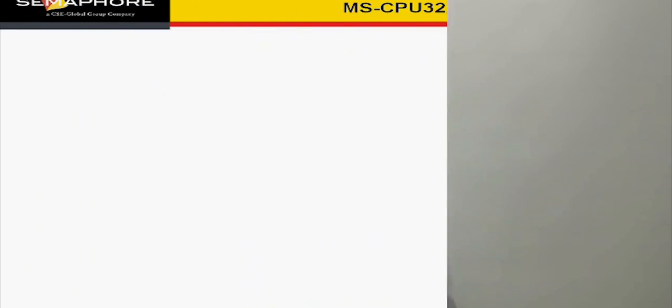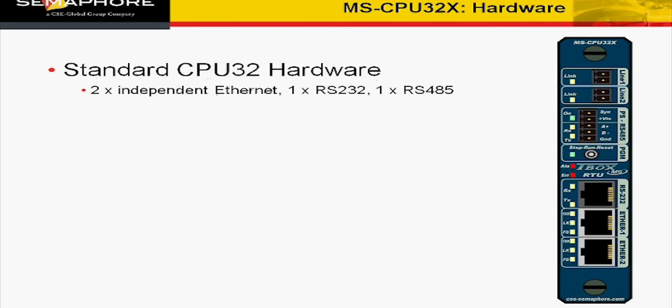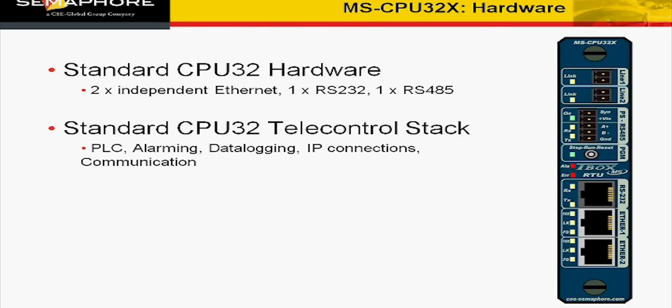As an example, let's take a look at the MS-CPU32X. The MS-CPU32X is based on the classical MS-CPU32 with its Ethernet and serial ports. It contains the tele-control stack with all TBOX features.